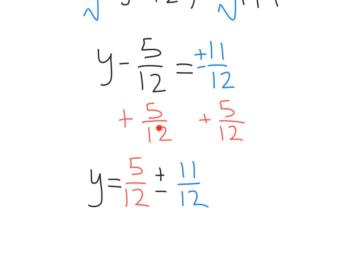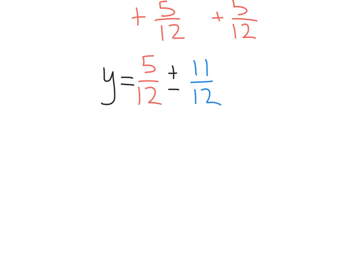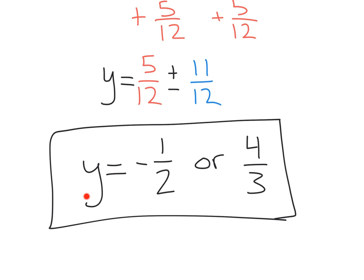Adding that 5/12ths over, we finally get y equals 5/12ths plus or minus 11/12ths. One last, adding, subtracting, and simplifying. We get our final answer, y equals negative 1 half or 4 thirds.